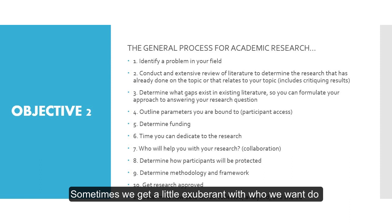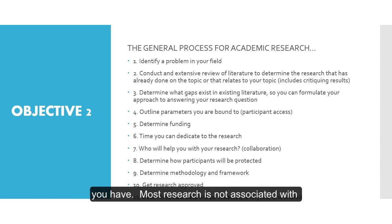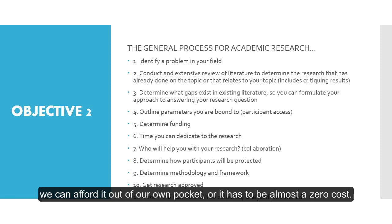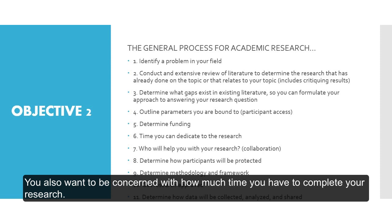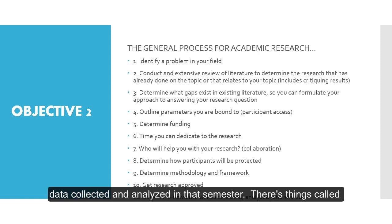You also want to outline the parameters that you're bound to as a researcher, including what participants you have access to — sometimes we get a little exuberant with who we want to do research on and we don't actually have access to all of those participants. You also want to be concerned with what funding you have, since most research is not associated with large grants and many departments don't have specific funds dedicated to research. You also want to consider how much time you have to complete your research, so you can ensure data is collected and analyzed within your available timeframe.